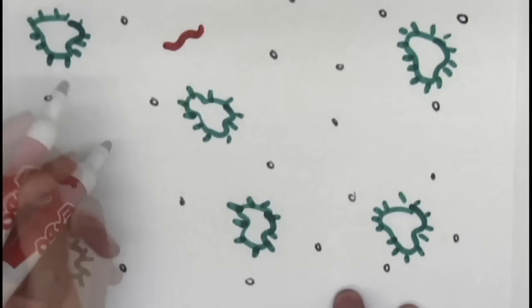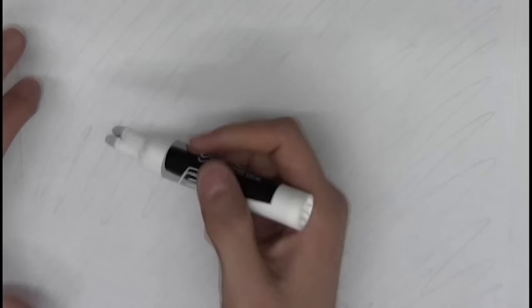Suspended particles that are too light and small to settle are called colloids. When looked at together, these colloids cause a state of cloudiness or haziness known as turbidity. The more cloudy a fluid looks, the more turbid it is.